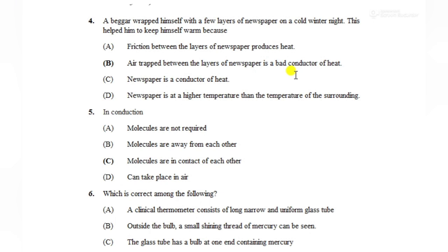Question number 4: A beggar wrapped himself with a few layers of newspaper on a cold winter night. This helped him keep warm because — options are: friction between layers produces heat, air trapped between layers of newspaper is a bad conductor of heat, newspaper is a bad conductor of heat, or newspaper is at higher temperature than surroundings। हमें सही option देखना है।